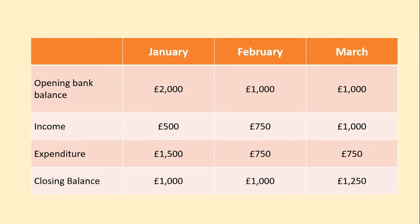Here's a concrete example: a business has an opening bank balance of £2,000 in January. They have income of £500 and expenditure of £1,500, so they're running down the money in their bank. They need to decrease expenditure and increase income. In February they do that — income increases to £750 and expenditure decreases, so they're roughly breaking even and the closing balance stabilises at £1,000. In March their opening balance is £1,000 and income increases again to £1,000 with expenditure of £750.